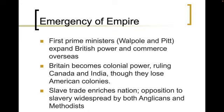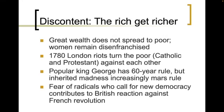Opposition to slavery is widespread, however, by both Anglicans and the Methodists. As we start seeing more discontent with the idea of slavery and the idea of new money versus old money, the great wealth does not spread to the poor. Women remain disenfranchised, so we see this greater divide in society. In 1780, London riots are going to turn the poor, the Catholics, and the Protestants against each other. Popular King George has got a 60-year rule, but he inherited madness that increasingly mars his rule throughout the 1700s. There is also fear of radicals who call for a new democracy, which contributes to the British reaction against the French Revolution in the 1780s and 90s.